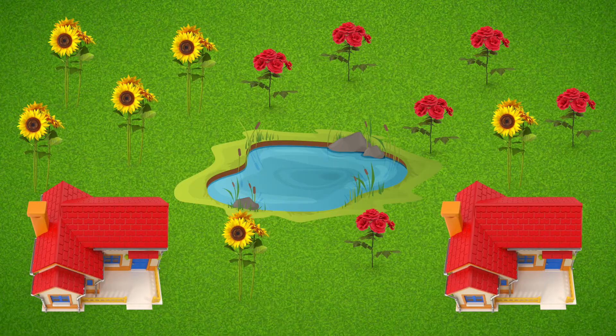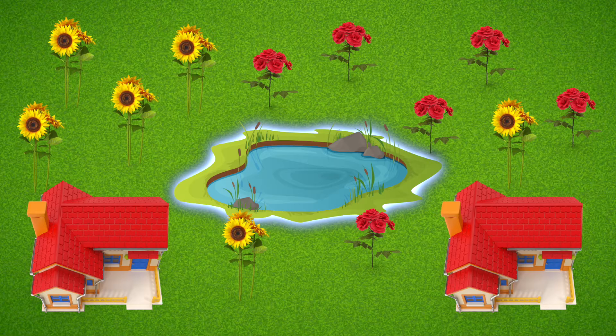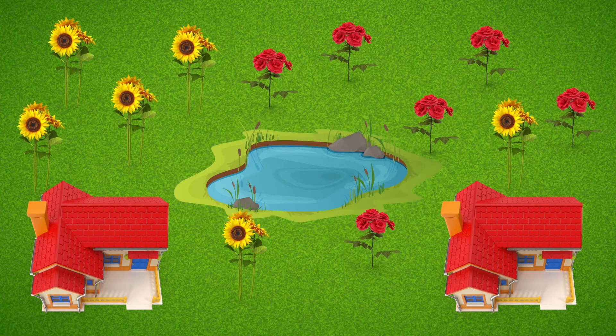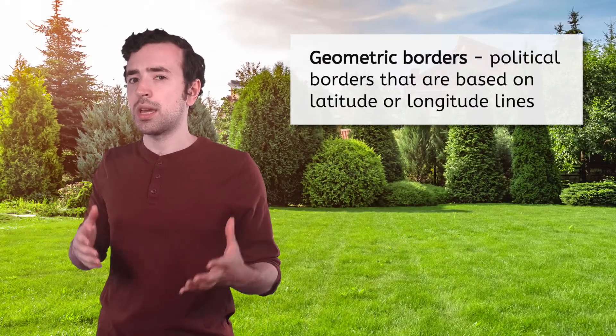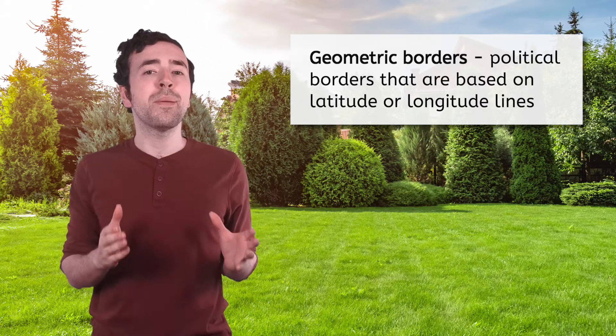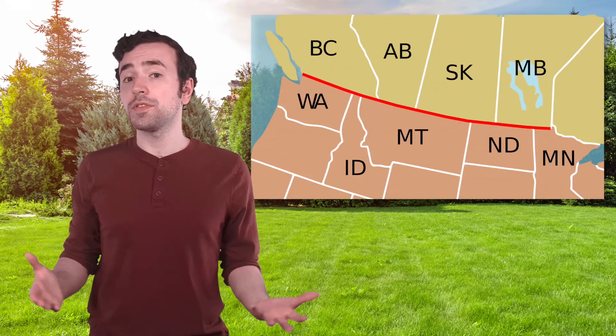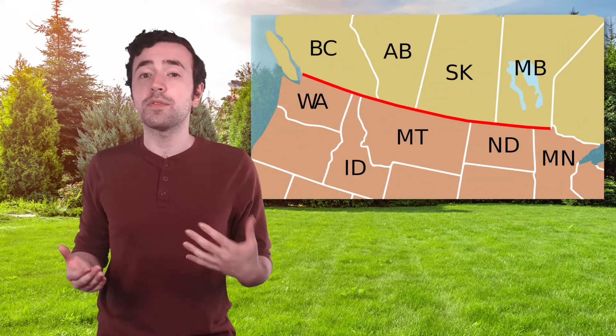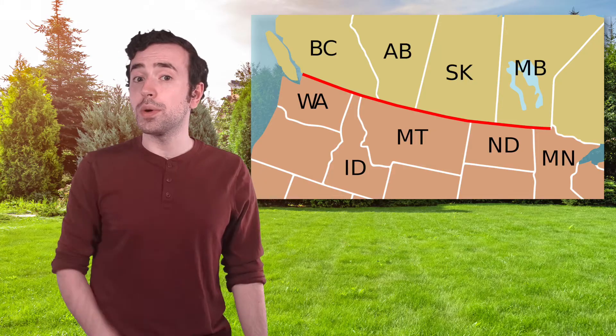But why would a country want to change its borders? Let's look closer at my backyard. Check out this map of our properties — we both want access to this fishing pond. So what if you just drew a straight line through the pond? Borders drawn as straight lines — more specifically, borders based on latitude or longitude lines — are called geometric borders.